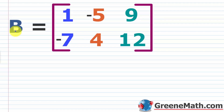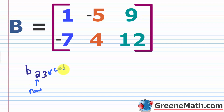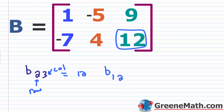To give an example, suppose we have matrix B with first row 1, negative 5, 9 and second row negative 7, 4, 12. If asked to find b sub 2,3 — row first, then column — the second row is the bottom row, and the third column is the rightmost. So b sub 2,3 equals 12. For b sub 1,2 — row 1 is the top row, column 2 is the middle — that gives us negative 5. Very easy.